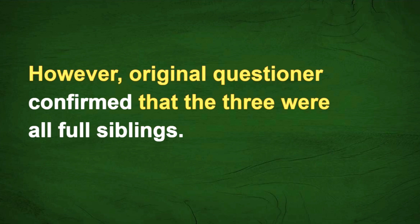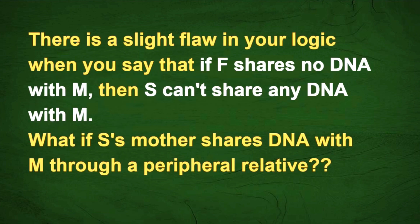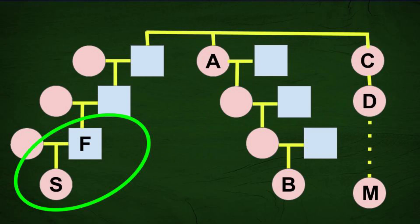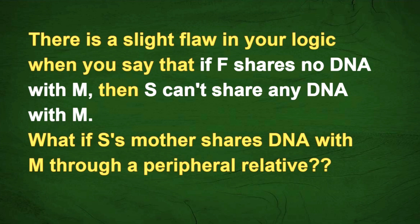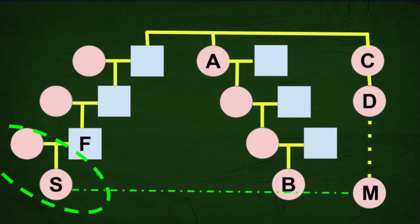But then I got another comment. A viewer said there's a slight flaw in your logic when you say that if F shares no DNA with M, then S can't share DNA with M — and that was because S is the daughter of F, so if F shares no DNA, F cannot pass on DNA to share with S. But what if S's mother shares DNA with M through a peripheral relative? In other words, S would be related to M both through her father and mother, but she only got DNA through her mother.